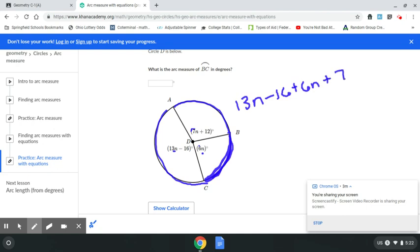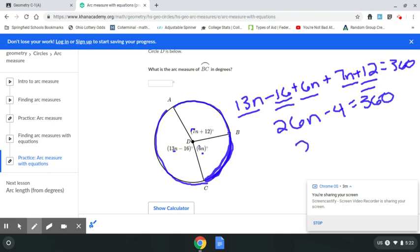13N minus 16 plus 6N plus 7N plus 12, and an entire circle is 360 degrees. Combine like terms. 13N plus 6N plus 7N, that gets me 26N. Negative 16 plus 12 is negative 4 equals 360. Add the 4 over, 26N equals 364. I divide by 26. And kids, I'm smart, I'm not that smart. 364 divided by 26 gets me 14 for N.